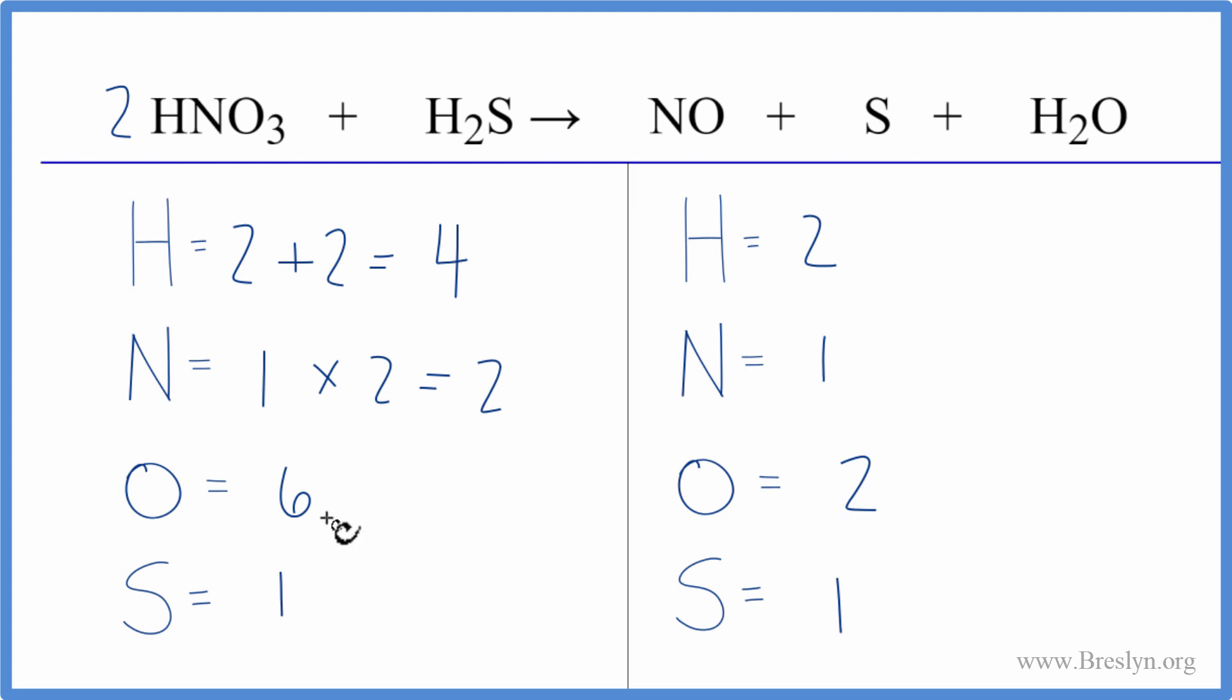Why don't we do the hydrogen first because we could just put a two in front of the H2O. Two times two, that gives us four hydrogens. Those are balanced. And then we have the one here, plus we have the one times the two. So now we have three oxygen atoms.